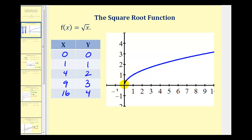So here's the point zero, zero. Here's the point one, one. Here's the point four, two. And here's the point nine, three. Of course, the point 16, four is off the screen. Now let's take a look at various transformations of this square root function.